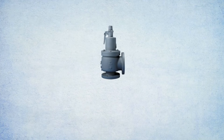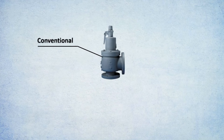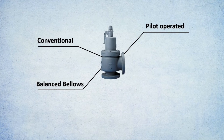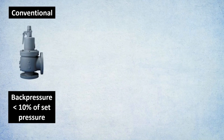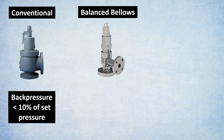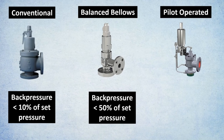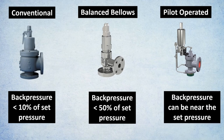To summarize: relief valves are divided into conventional relief valves, balanced bellows relief valves, and pilot operated relief valves. One of the most important selection criteria is the back pressure factor. For conventional relief valves, back pressure must be less than 10 percent of set pressure. For balanced bellows relief valves, it must be less than 50 percent. For pilot operated relief valves, it can be near the set pressure as per vendor recommendation.